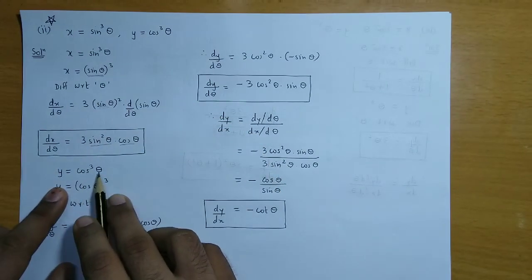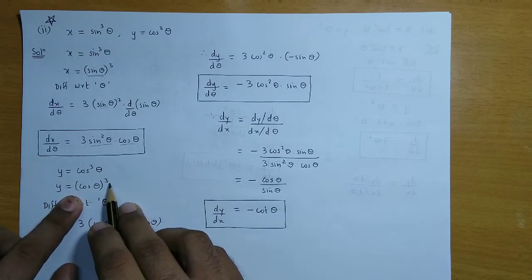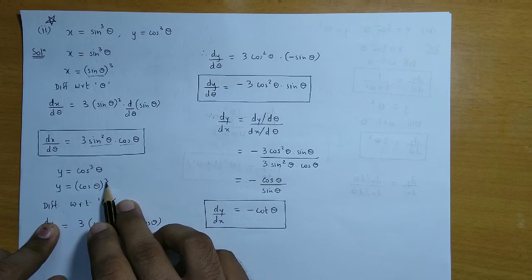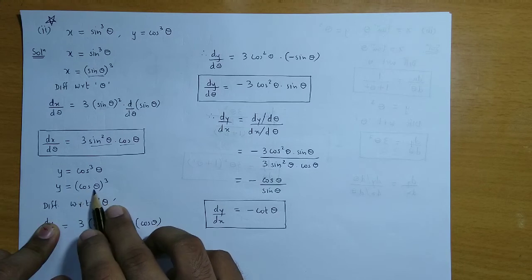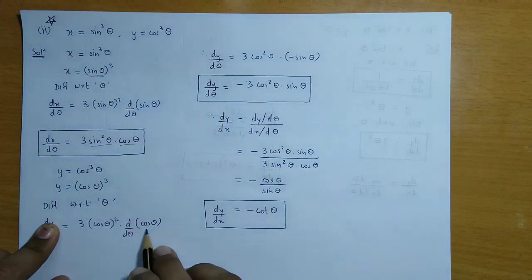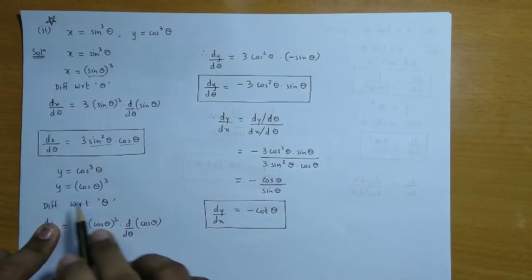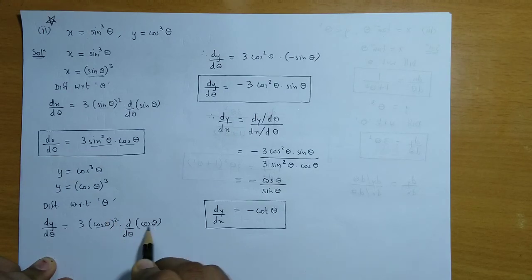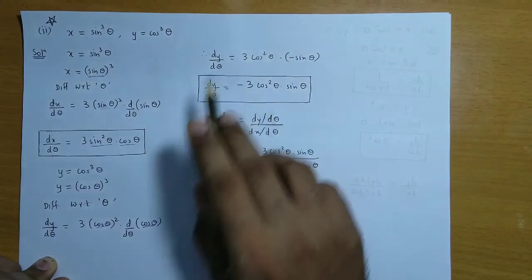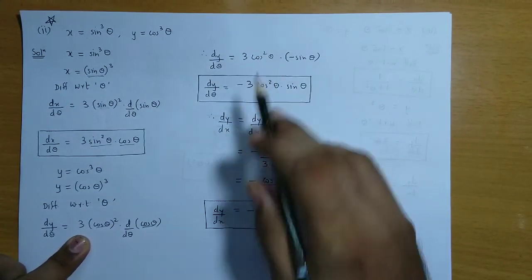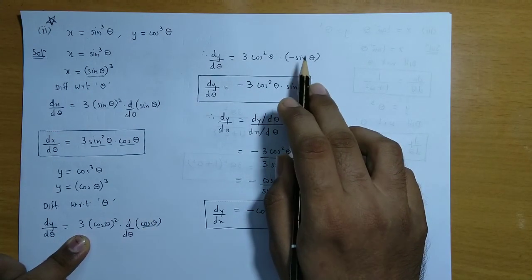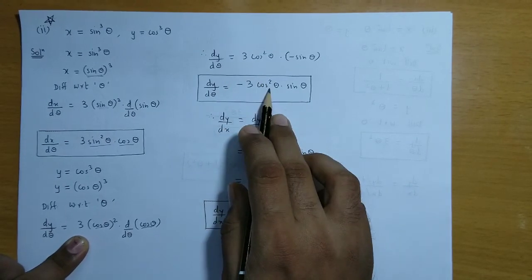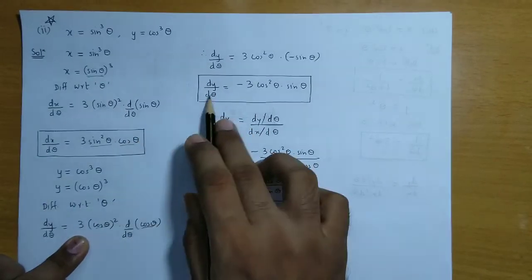Now y = cos³θ, which we write as (cosθ)³. Differentiating with respect to θ using the chain rule: dy/dθ = 3(cosθ)² × derivative of cosθ. The derivative of cosθ is −sinθ, and (cosθ)² = cos²θ. So dy/dθ = −3cos²θ · sinθ.